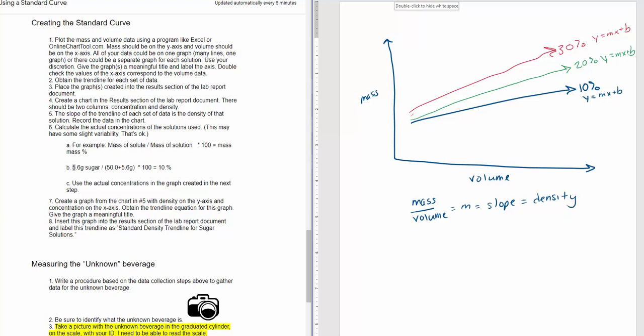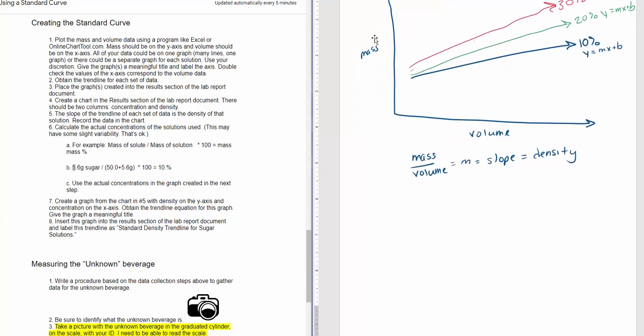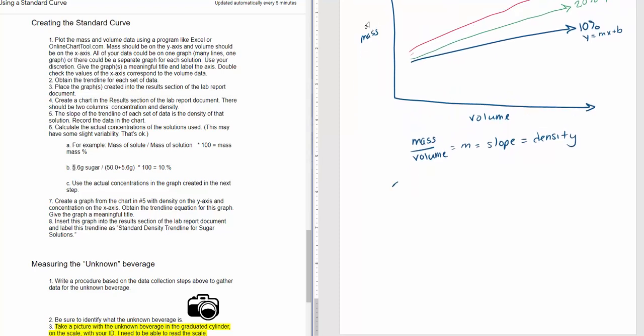So then you need to produce one more graph. You need to take all of the densities, all of the slopes that you have found, and the density then is going to be on the y-axis and the concentration on the x-axis. So we'll have our 10 and our 20, 30 and 40, and you will have a density line.